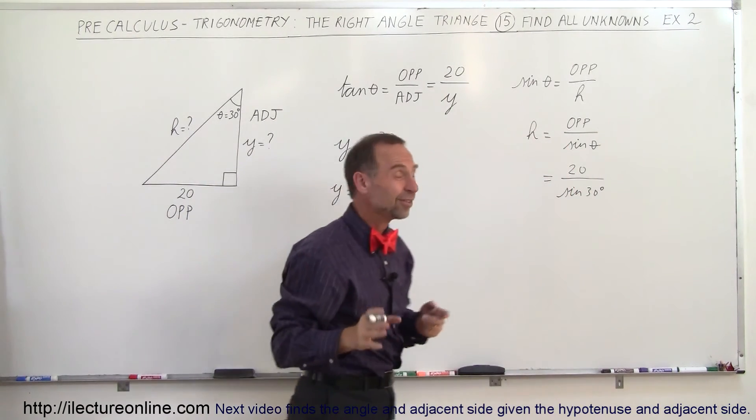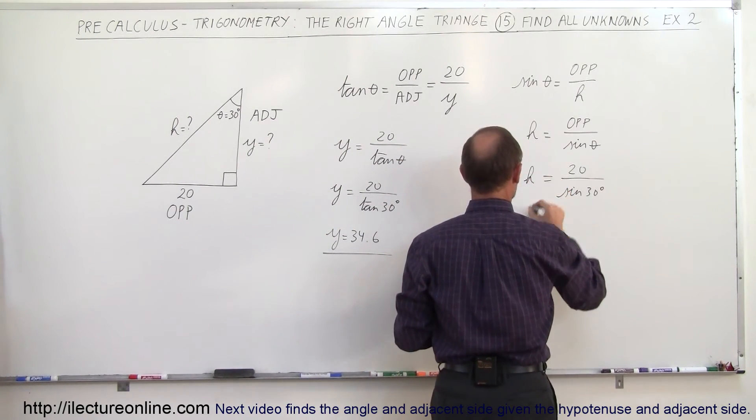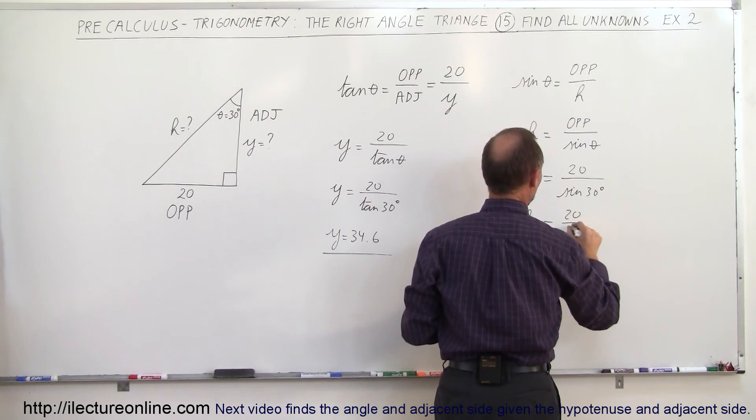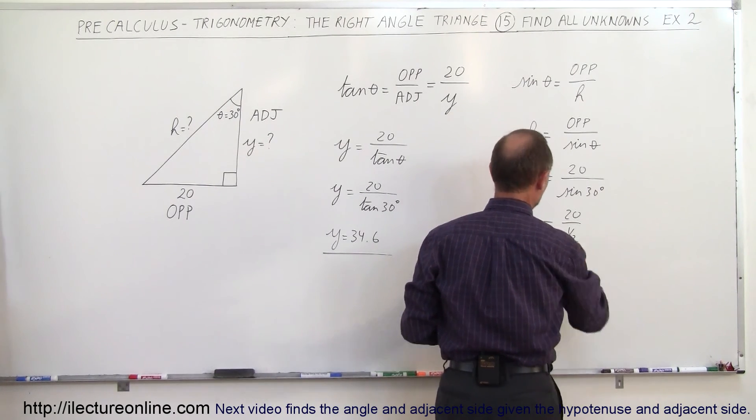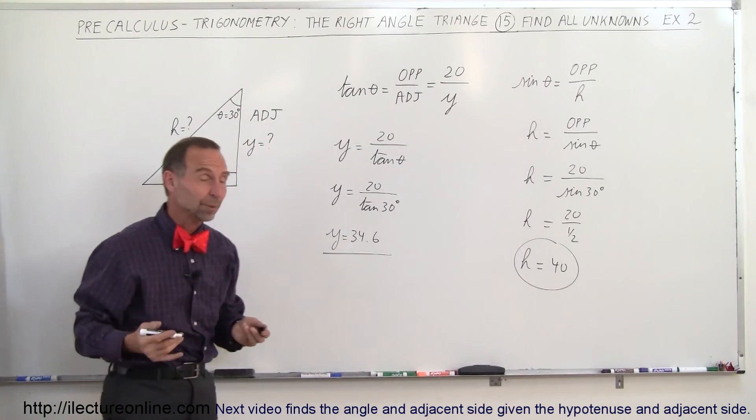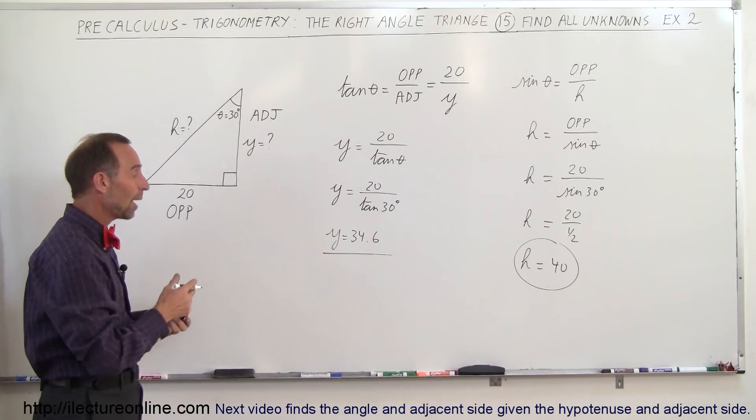Notice that the sine of 30 is easy, that's 1 half, so this is equal to 20 divided by 1 half, so that means 40. Because we divide by 1 half, the same as multiplying times 2, so therefore we found H, and we found Y.